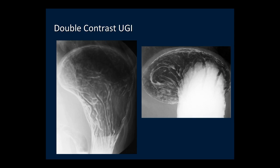To visualize the fundus, the patient should stand upright or be turned into the right lateral position. In the right lateral position, you can see a smooth oval rosette surrounding the GE junction, and this is the gastric cardia.